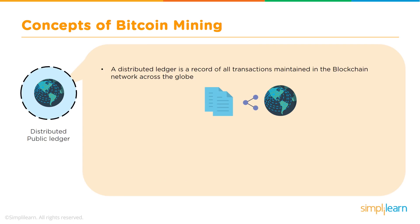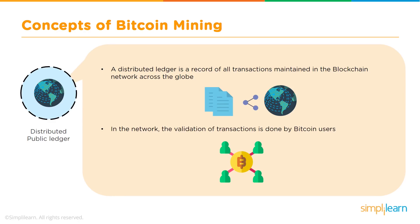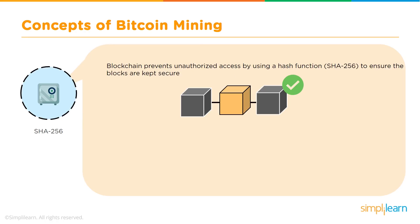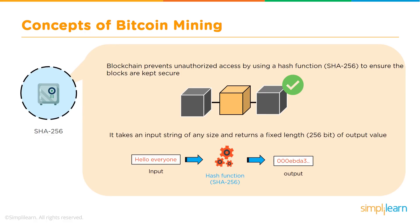Blockchain prevents unauthorized access by using the SHA-256 hash function to keep blocks secure — they are digitally signed and their hash value, once generated, cannot be altered. SHA-256 takes an input string of any size and returns a fixed-length 256-bit output. It is a one-way function: you cannot reversibly derive the input from the output.